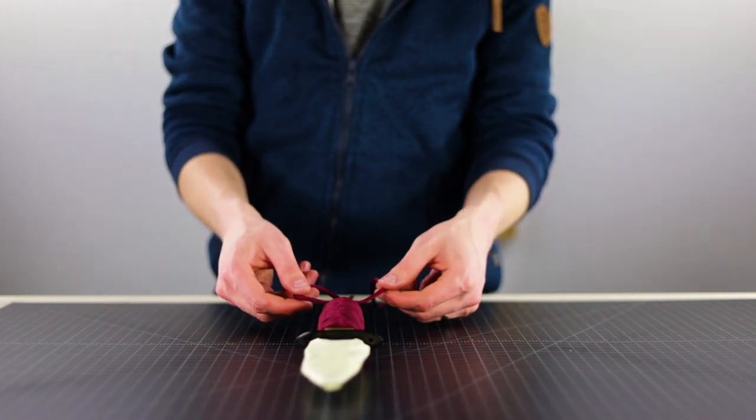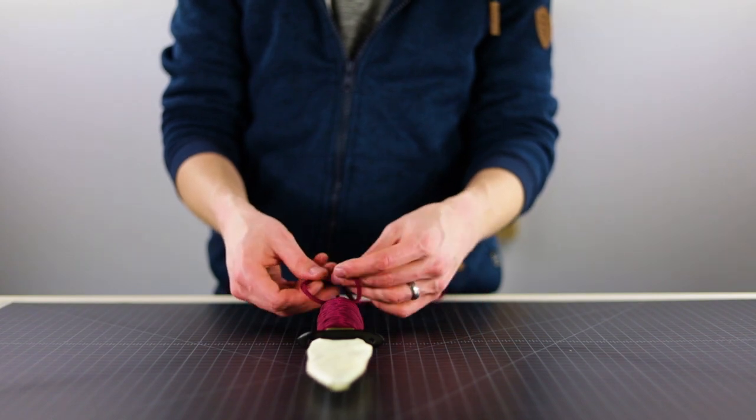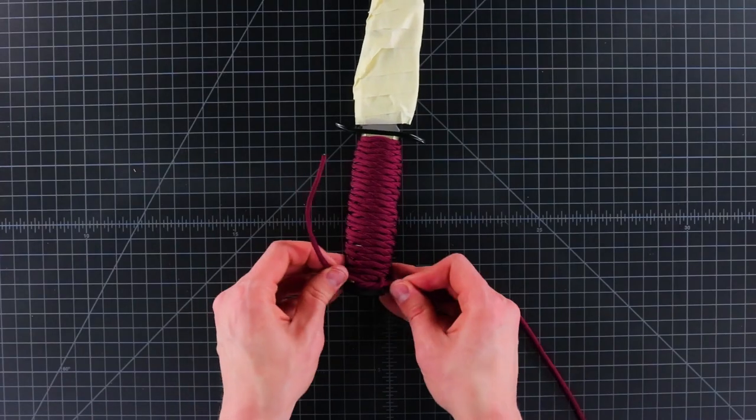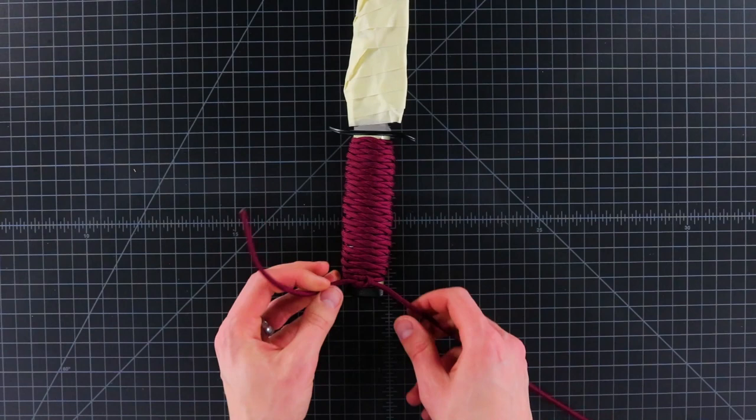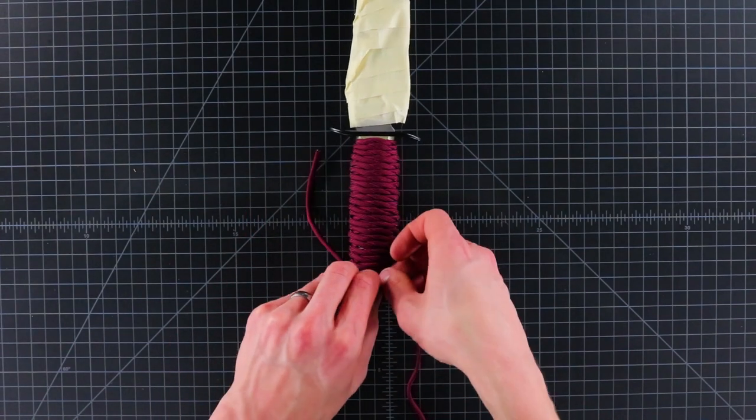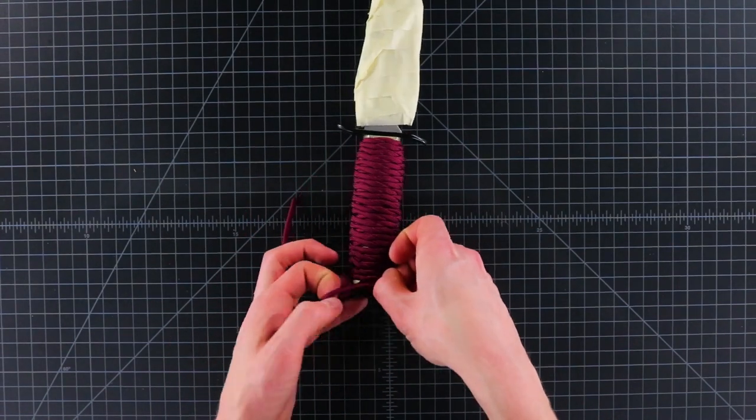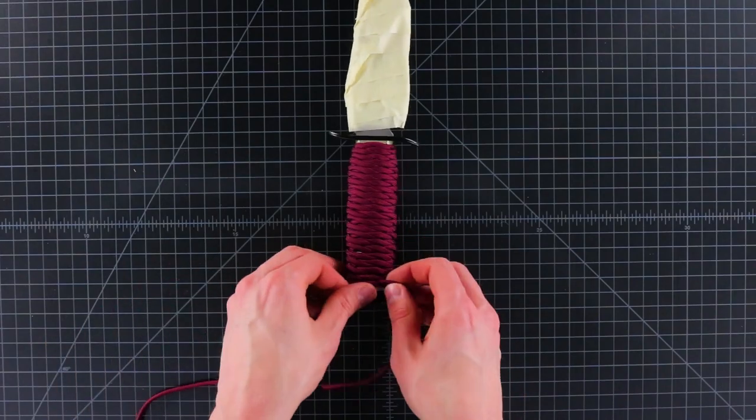Some people will finish this off by turning this bottom knot into a square knot like this, and then they'll leave a little bit of a tassel. I'm not going to do that. I'm just going to cut the ends off and flatten them so that they don't slip through.